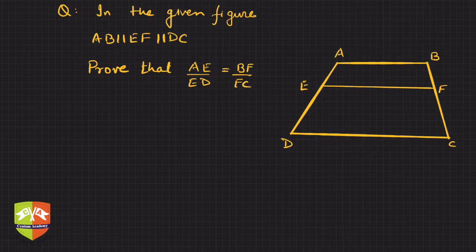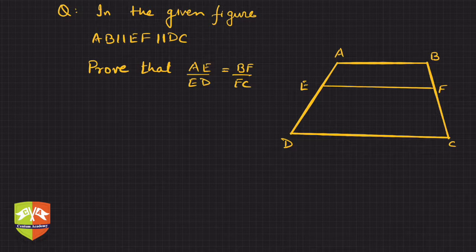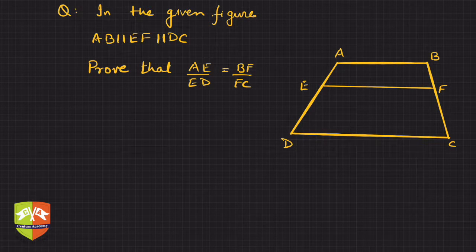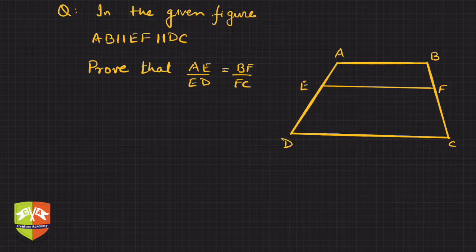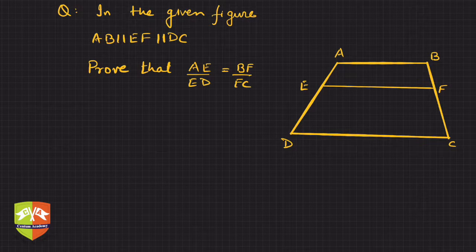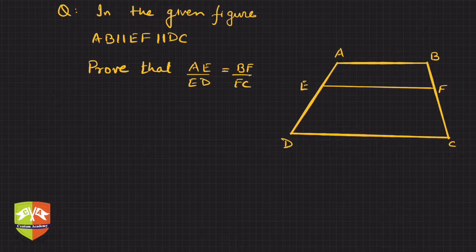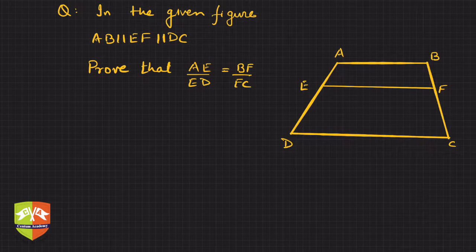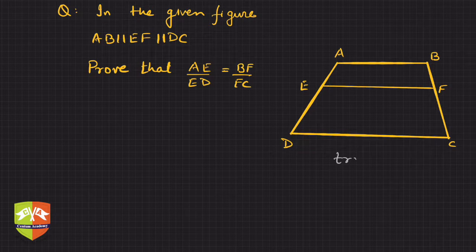Hi, so in this question it's given that AB is parallel to EF and EF is parallel to DC, and that means this particular diagram ABCD is a trapezium.